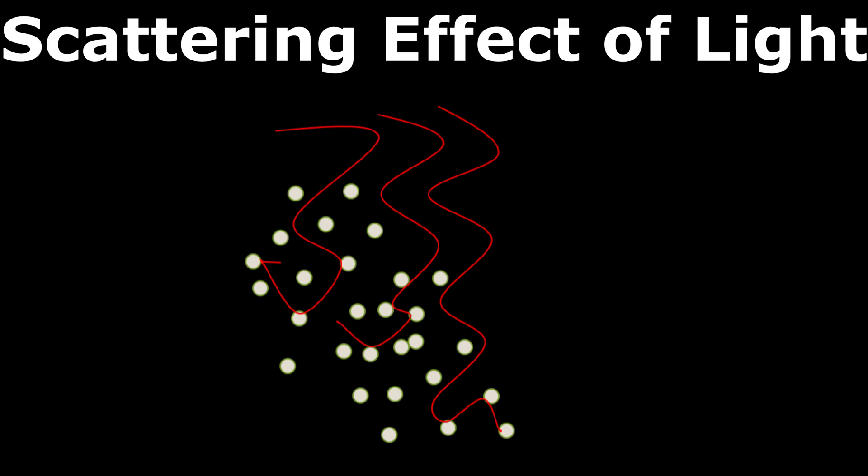We all have observed that the color of the sun appears red during sunrise and sunset. But have you ever wondered why does this happen? If you don't know the reason, then let me tell you that this happens because of the scattering effect of light.